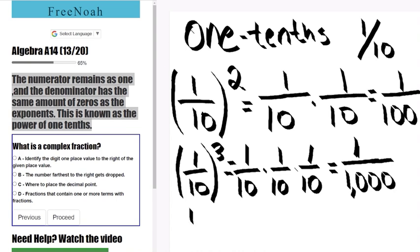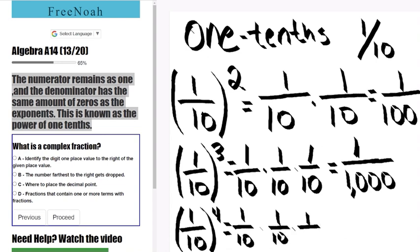Let's go ahead to the next one and bump it up by one again. So one over ten to the fourth power. This is going to rewrite as one over ten times one over ten times one over ten times one over ten, giving us a solution of one over ten thousand.